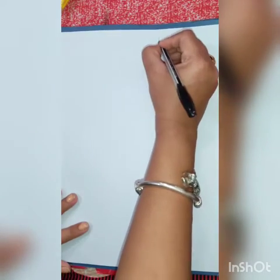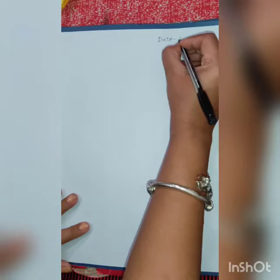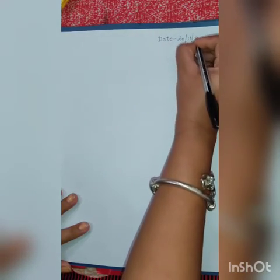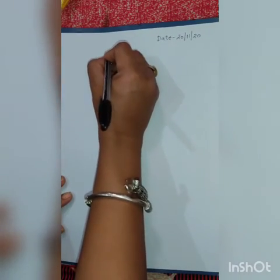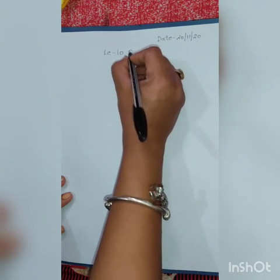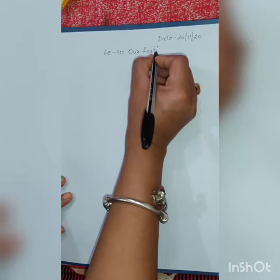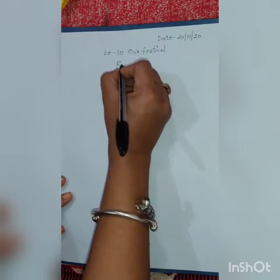In today's video we are going through revision part 3, in which we are going to do 'Circle the Correct Word' of lesson number 10, 'Our Festivals'. I am writing today's date: 20th November. Lesson number 10, 'Our Festivals' — revision.